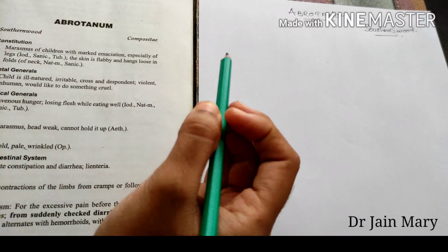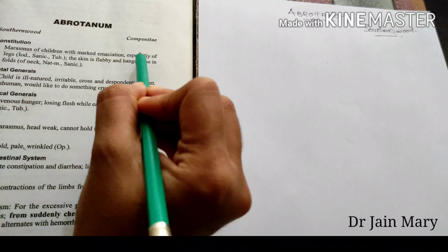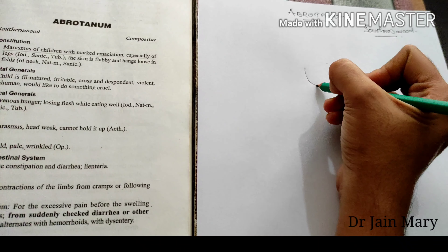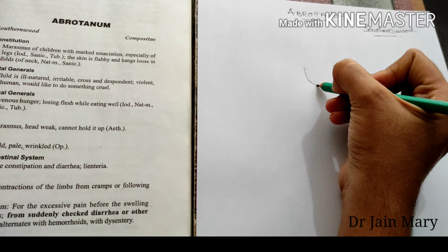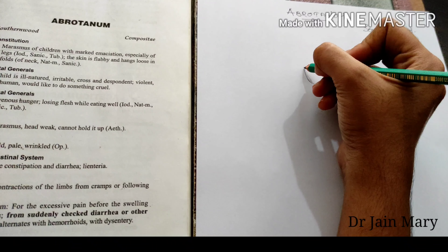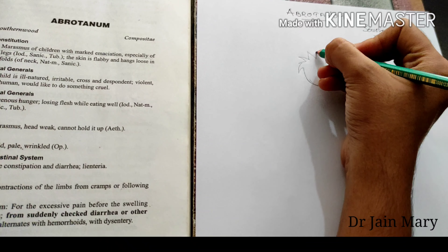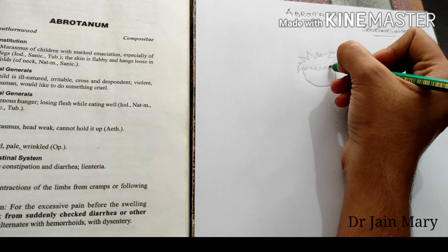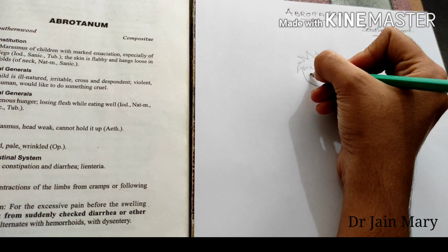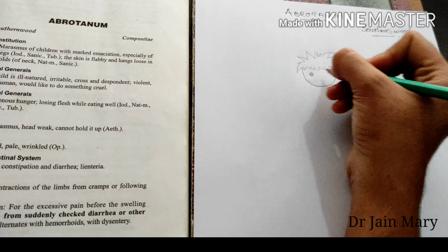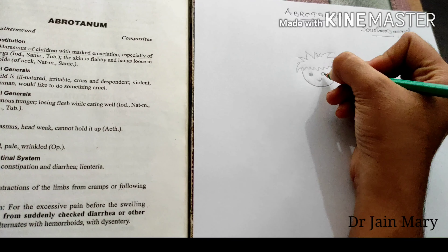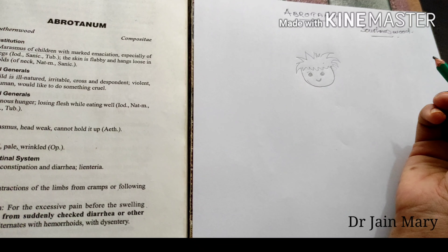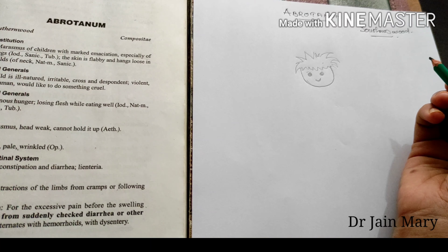We want to draw a boy because we are showing a pictorial representation of the Abrotanum child. We are now drawing his head. The main features of Abrotanum are marasmus — the baby is marasmatic, mainly in the legs, that means lower extremities, and also the head.